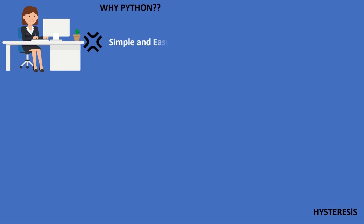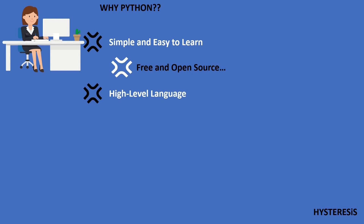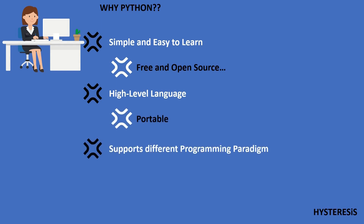The first thing is it's really simple and easy to learn, so less time to get trained, less time to develop software, less time to implement it. It's also free and open source — you can use it, modify it, even sell it, and don't have to pay anything. It's a high-level language with a big domain. It's portable and supports different programming paradigms, including scripting and object-oriented programming.